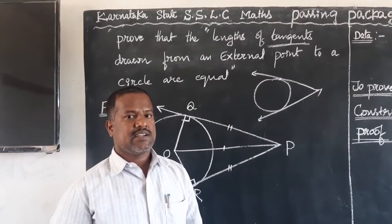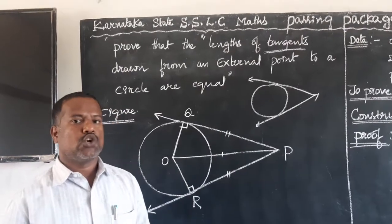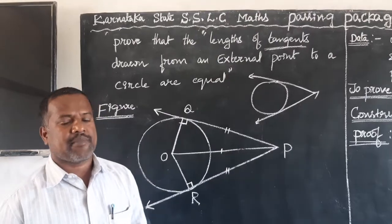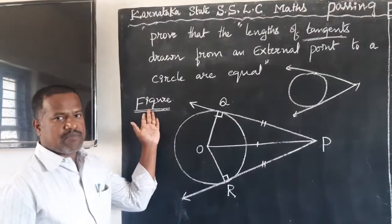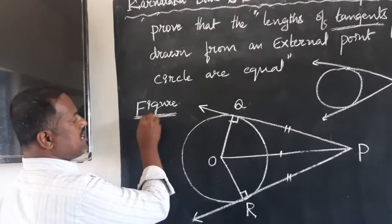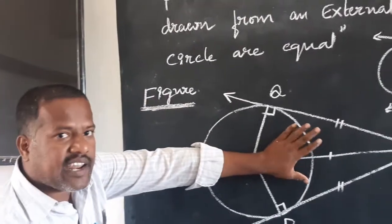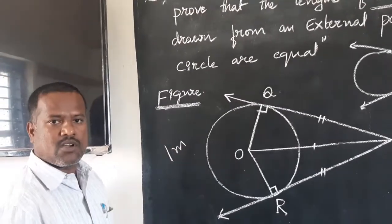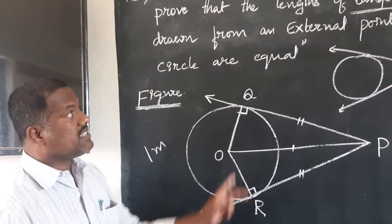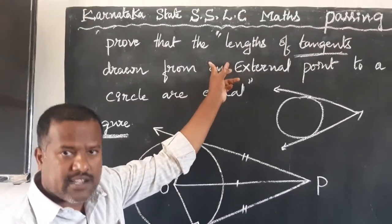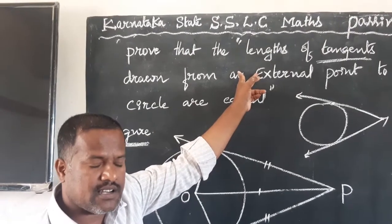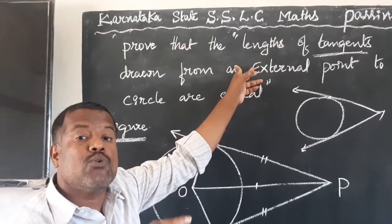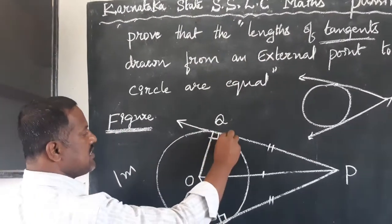The first step is figure — it is very, very important. If you have the correct figure, you will get marks. This theorem is based on a circle, so you should draw a beautiful circle.